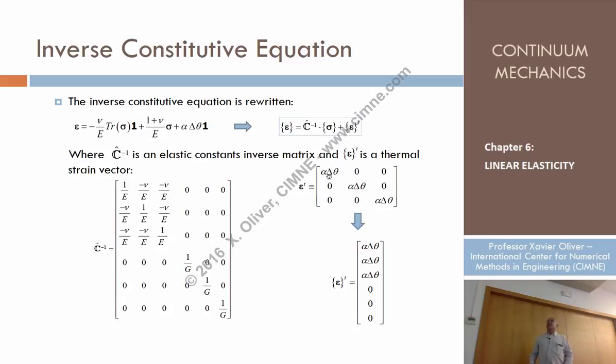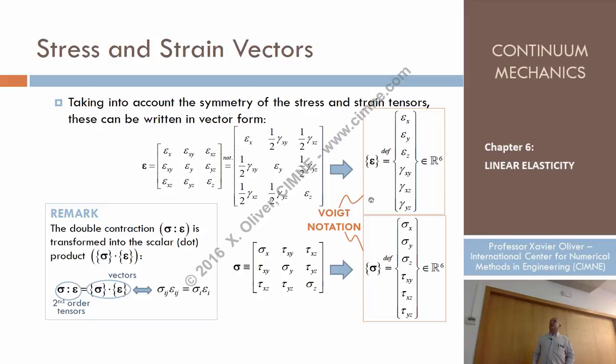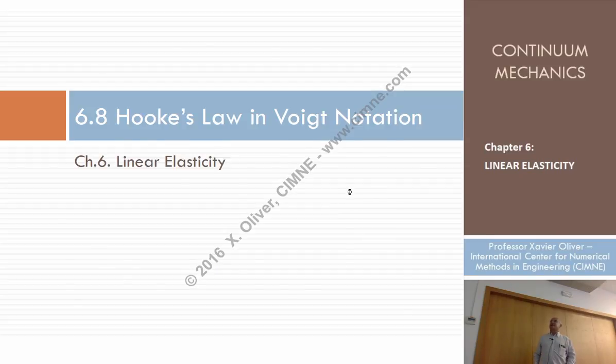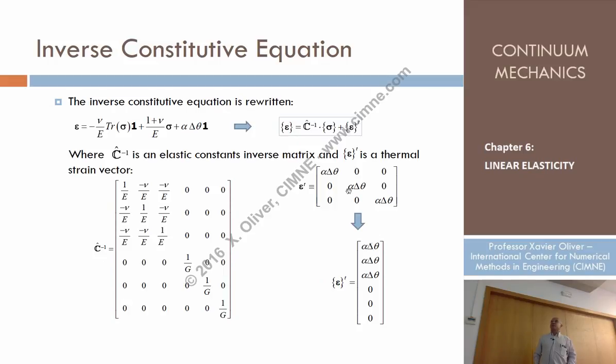Look, how do we obtain the thermal strains? This is epsilon x, epsilon y, epsilon z. They will be here. And here will be the angular strains. But the thermal strains don't have any angular components. So the vector of thermal strains in Voigt notation has these three terms here and zero for the others. And that's what you will find if you try to implement an elasticity problem in a finite element, using this inverse constitutive equation to express Hooke's law.